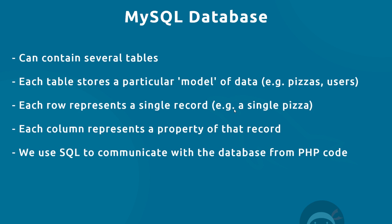So that's what MySQL is. The takeaway points are: a MySQL database can contain several different tables, each table stores a particular model or data type, each row represents a single record, and each column represents a property of that record. We use SQL — the Structured Query Language — to communicate with the database from our PHP code. In the next lesson I'm going to start by creating our first MySQL database.